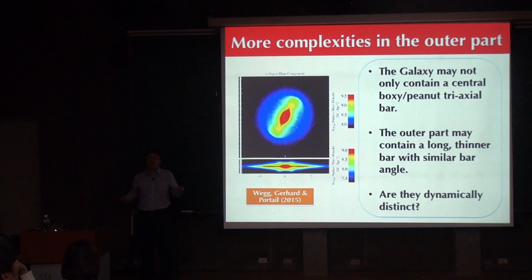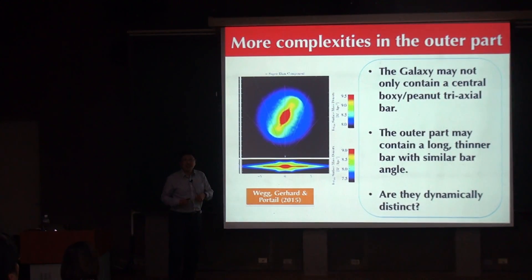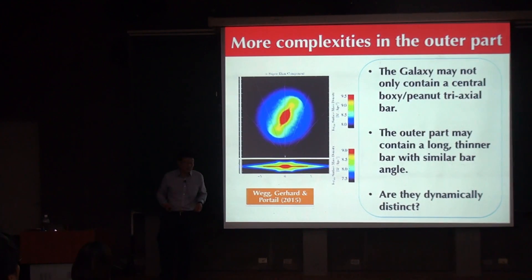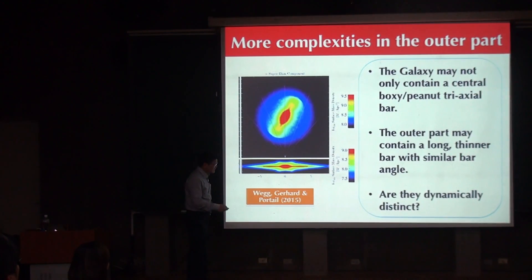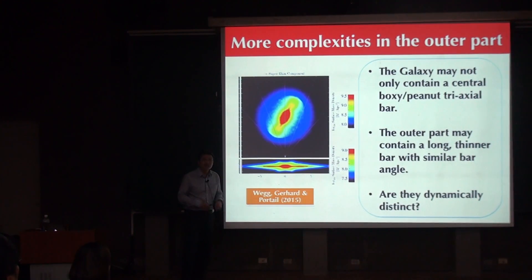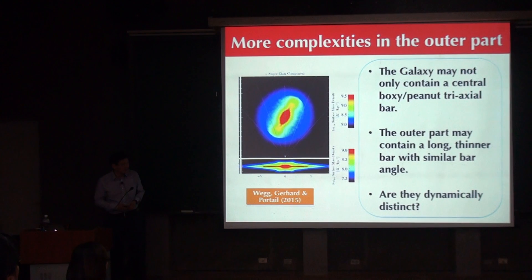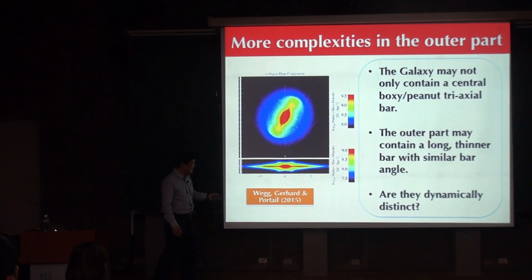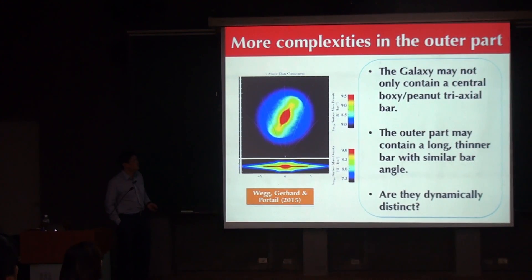Of course, real galaxies are very complex — you may decompose them into many different components. The key question is: are they really meaningful? The right question to ask is whether these different components are dynamically distinct — do they have different stellar motions? When that is the case, it really leads into the second part of my talk: the dynamical modeling of the Milky Way bar.